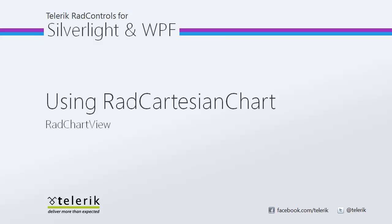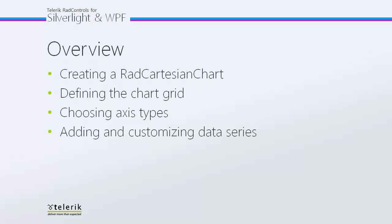Today we're going to take a look at using RAD Cartesian Chart, part of RAD Chart View, which is a brand new control in the Telerik RAD Controls for Silverlight and WPF control suites for .NET XAML development. In today's video, we're going to dive into Visual Studio and see what it takes to create a brand new RAD Cartesian Chart, including defining the chart grid, choosing axis types, and adding and customizing a data series to display in our running application.